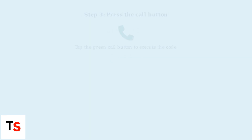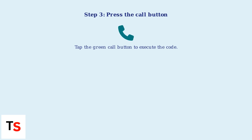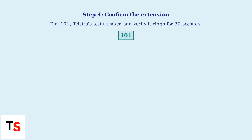Press the call button to send the code to Telstra's network. This activates the 30 second ring time. To confirm, call 101, Telstra's test number. Your phone should now ring for 30 seconds before going to voicemail.